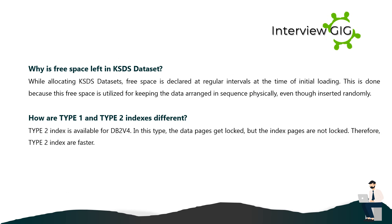Why is free space left in a KSDS dataset while allocating? Free space is declared at regular intervals at the time of initial loading. This is done because the free space is utilized for keeping the data arranged in sequence physically, even though records may be inserted randomly.